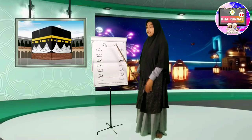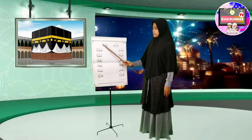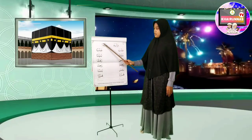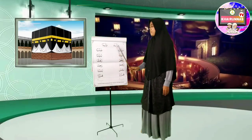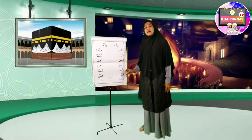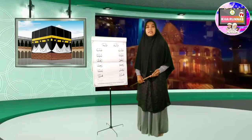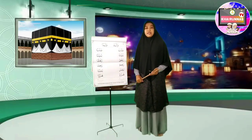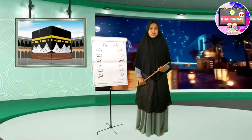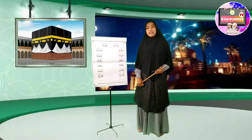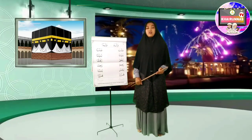Ini adalah contoh kalimat Fathatain. Fathatainnya di atas dua ya, maka dibacanya 'an'. Bunyinya 'an'. Baik, ta'ud, basmalah bersama-sama. A'udzubillahiminasyayukonirrojim. Bismillahirrohmanirrohim.